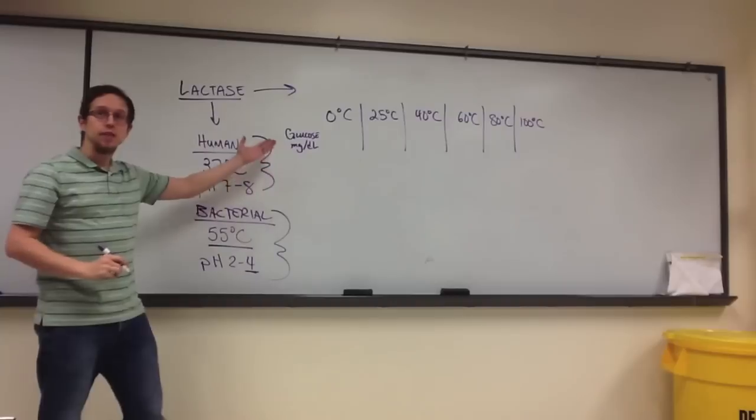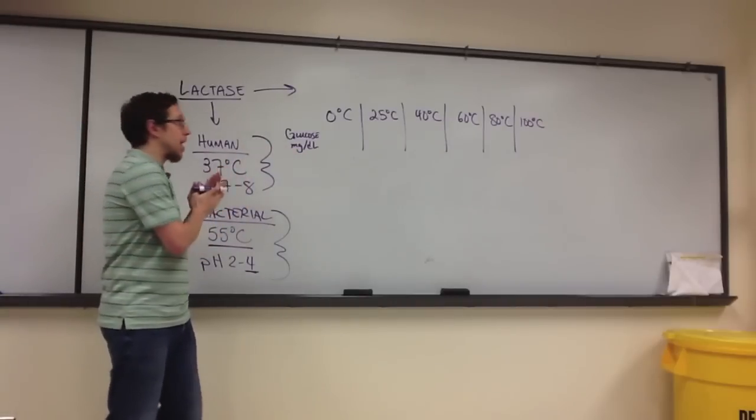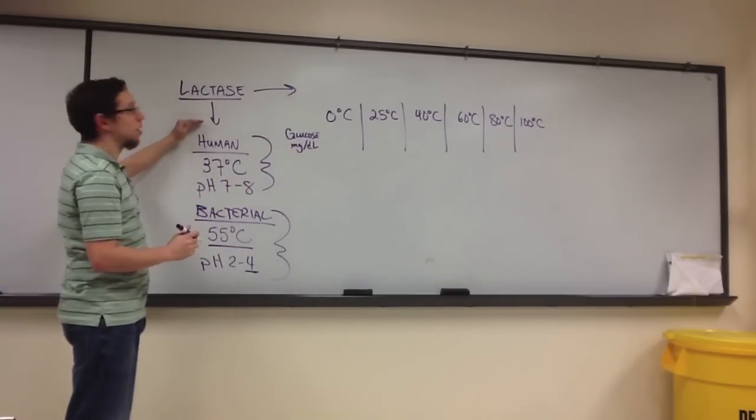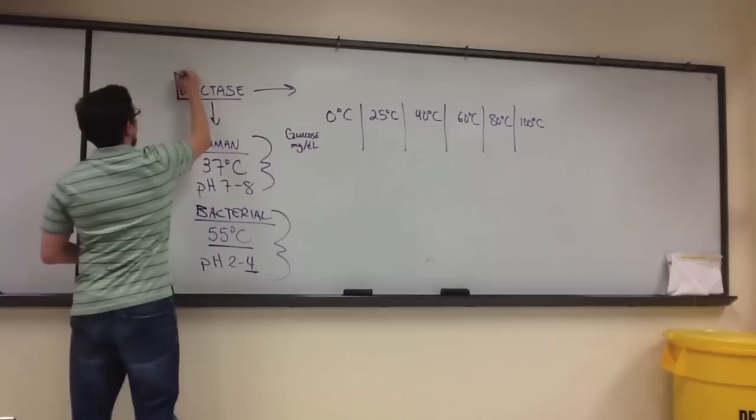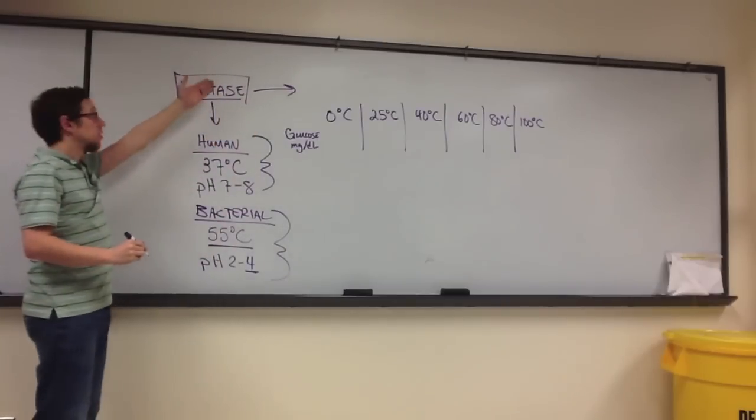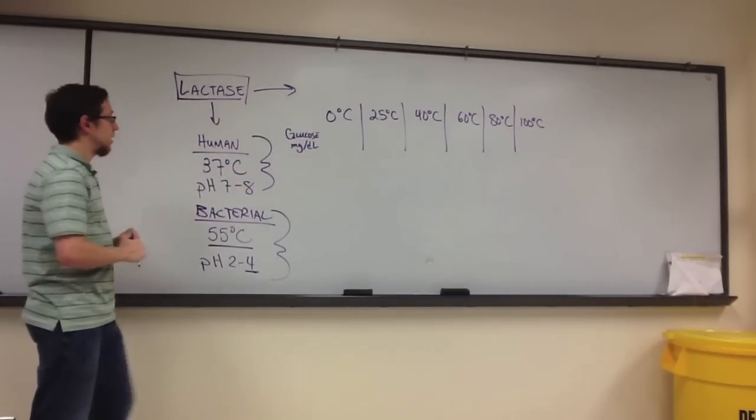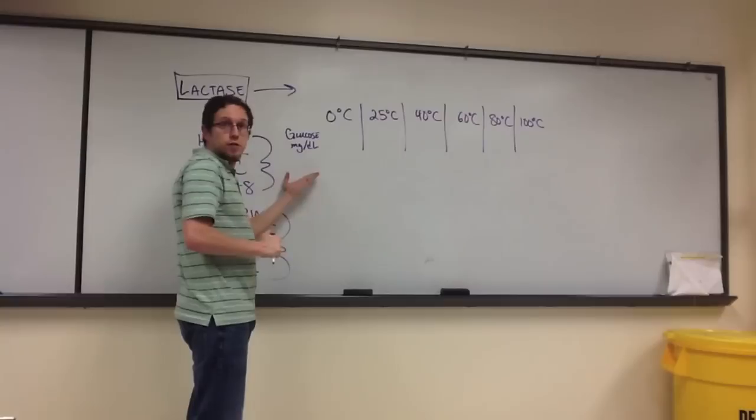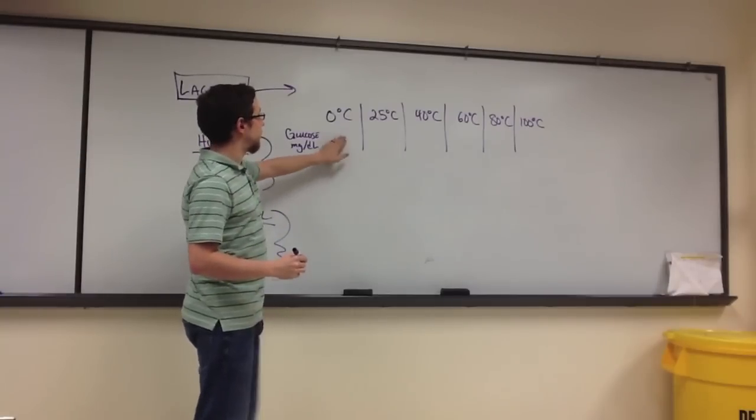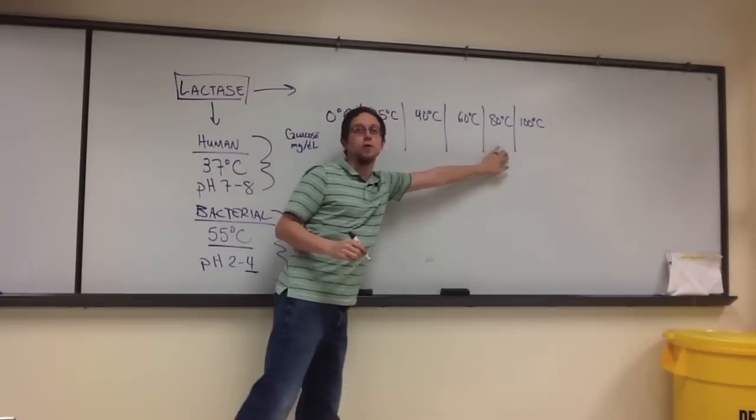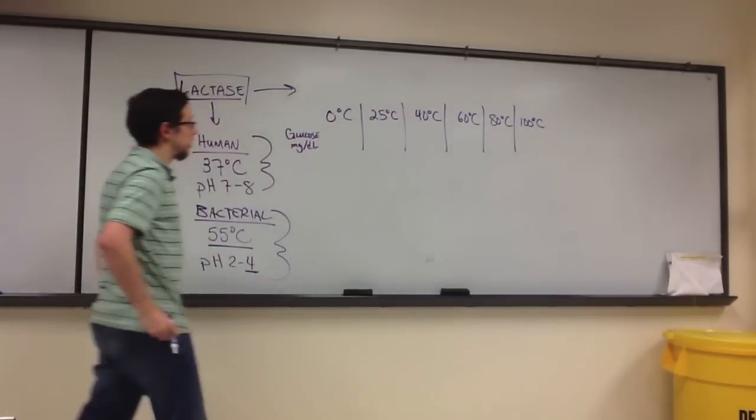Because glucose is one of the products that results from hydrolyzing lactose. So when we hydrolyze lactose and that reaction is sped up by the presence of lactase, we start to accrue glucose. So what you did was you measured the relative levels of glucose at each of these temperatures.